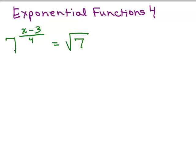Hopefully you might notice that the base we want is 7. 7 is prime, so I can't do anything with this 7 on the left. So I could just leave that as 7 to the x minus 3 over 4. But on the right, square root of 7, could you write that as a base of 7? That means 7 to the 1 half.